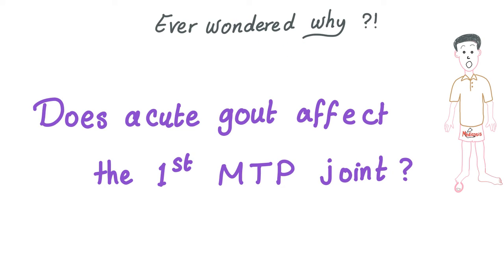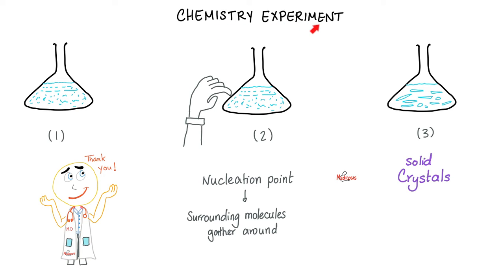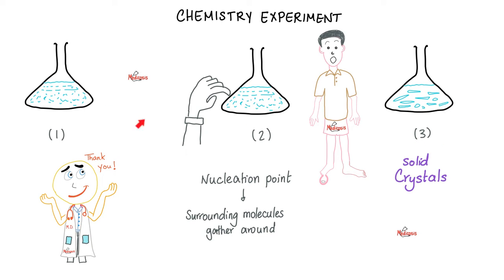If you've watched my video on gout in my rheumatology playlist, I asked: why does gout affect the first metatarsophalangeal joint — why your big toe? To answer this, recall the chemistry experiment: you start with a beaker containing fluid and scratch it, creating a nucleation point. Before you know it, crystals form. That's exactly what happens in the big toe — a nucleation point, i.e., trauma, because your big toe carries the entire weight of your body. Solid crystals made of monosodium urate. That's why uric acid and gout affect the big toe.